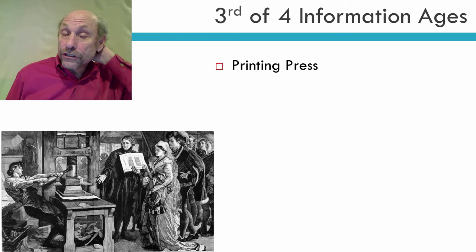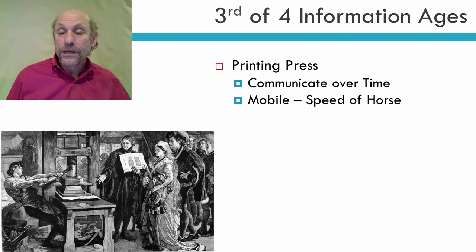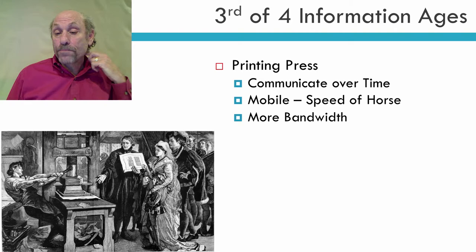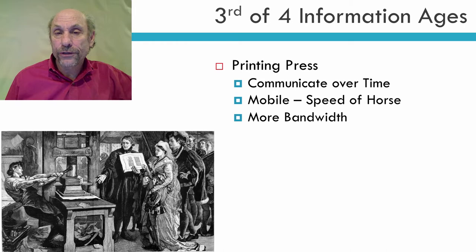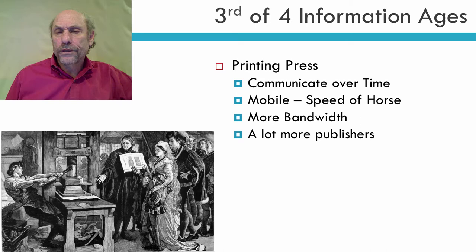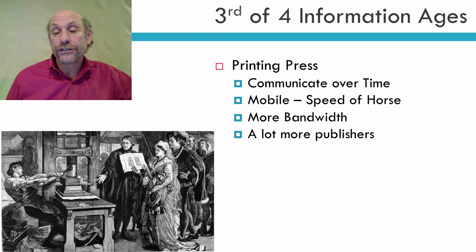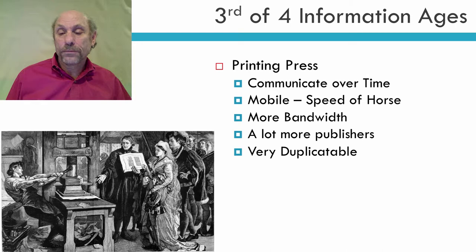The third information age is the printing press, and this was a huge step forward. Again, you could communicate over time, and also over distance, but you were still limited to the speed of a horse. You had a lot more bandwidth than in the first age, because now you could create books that were fairly efficient in putting information together, and a lot more publishers. During this age, many people bought their own printing press — Benjamin Franklin and many non-government, non-church entities had their own printing press. Though it was still limited to people who were wealthy and educated, it's important that you had a lot more publishers.